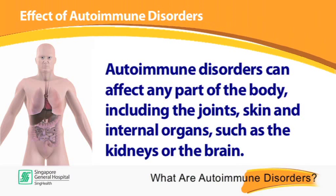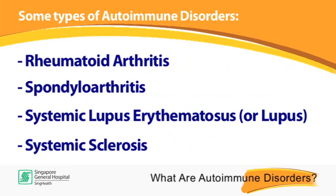Autoimmune disorders can affect any part of the body including the joints, skin, and internal organs such as the kidneys or the brain. There are over 80 types of autoimmune disorders, which include rheumatoid arthritis, spondyloarthritis, systemic lupus erythematosus or lupus, and systemic sclerosis.